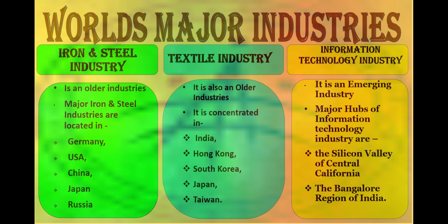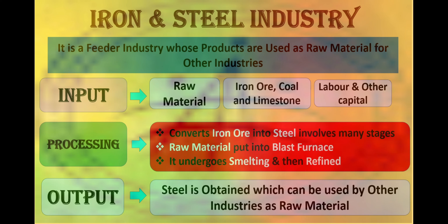Now there are several industries which are of great importance but among them three are major. First is iron and steel industry. It is among the older industries and major iron and steel industries are located in Germany, USA, China, Japan, and Russia. Iron and steel industry is a feeder industry whose products are used as raw material for other industries. Steel is obtained by processing iron ore.